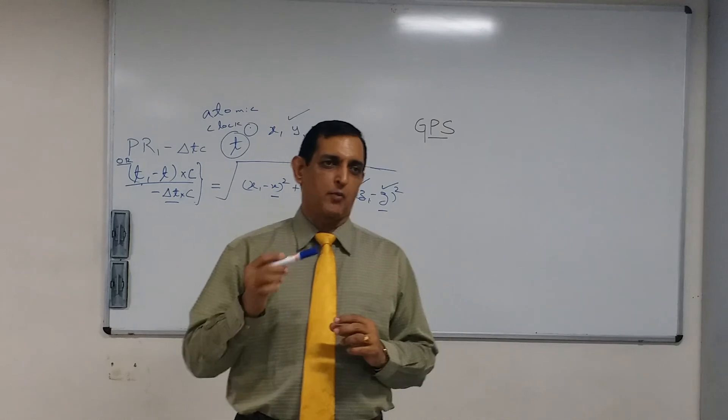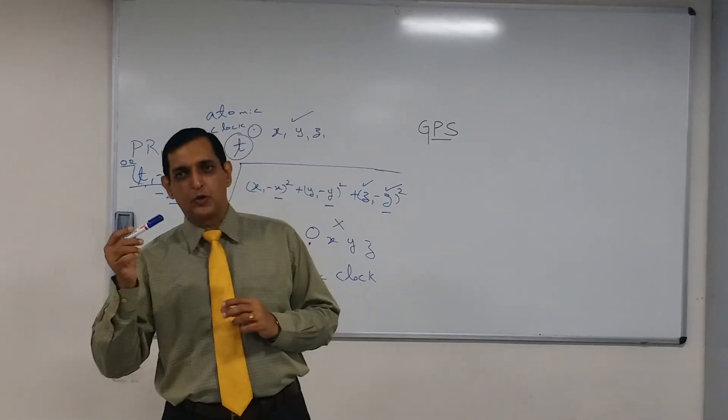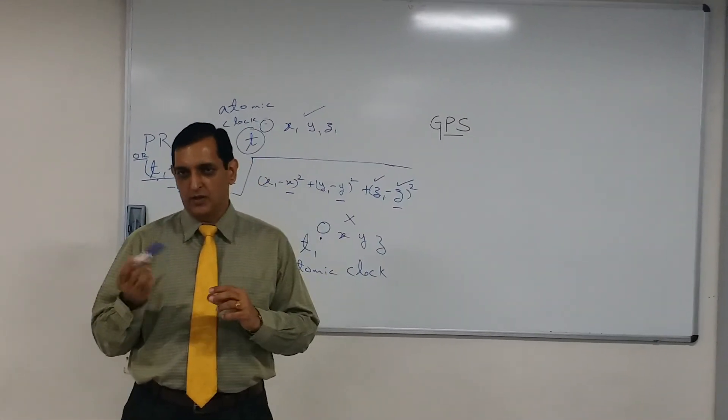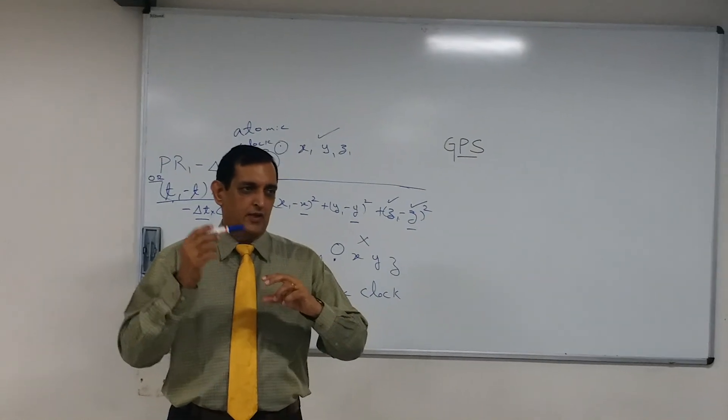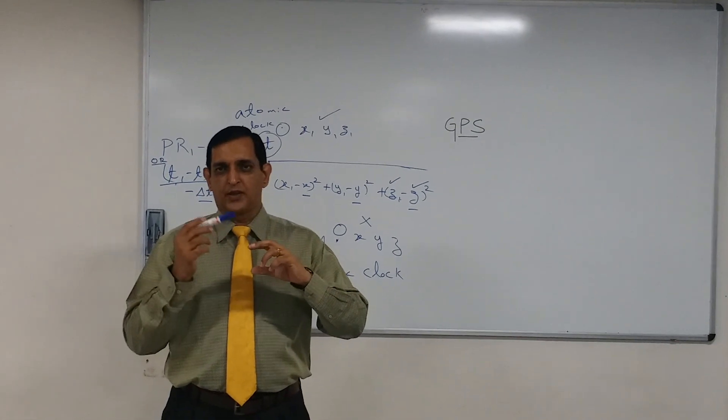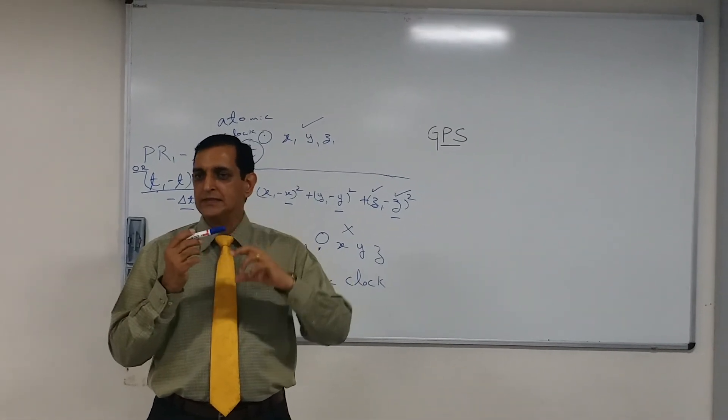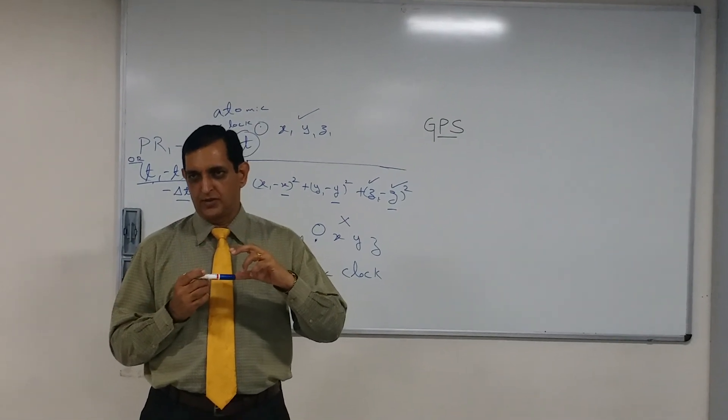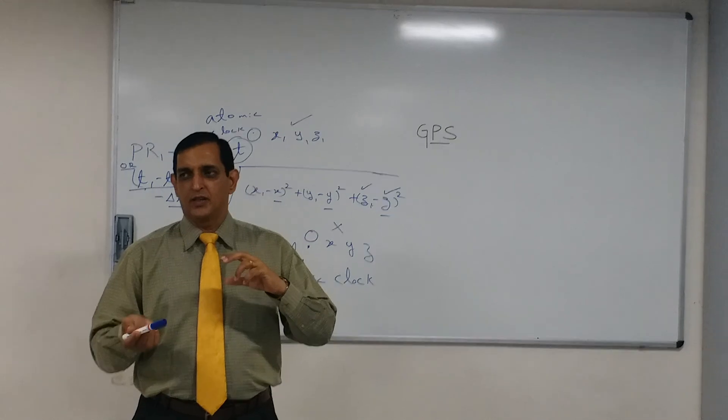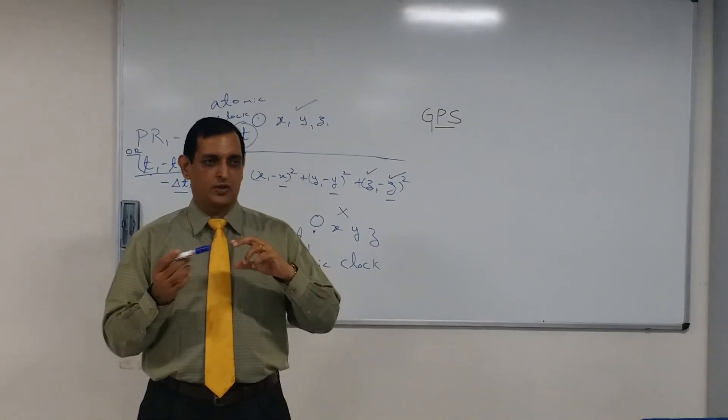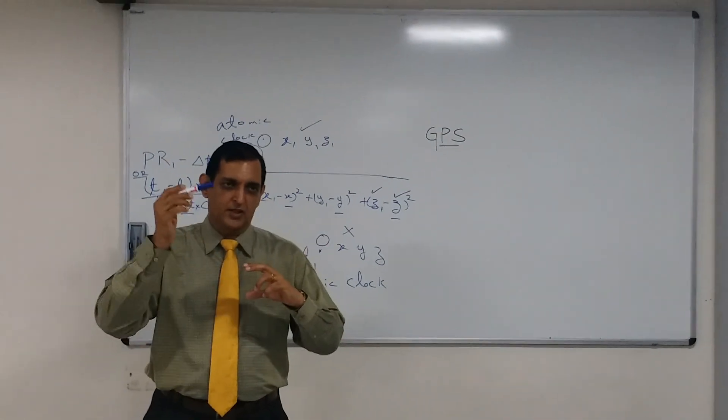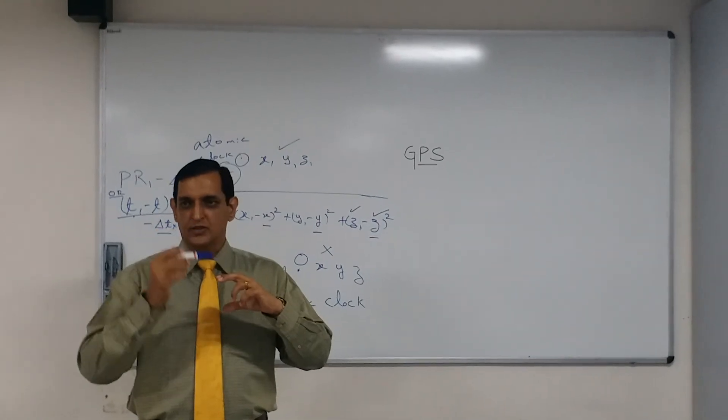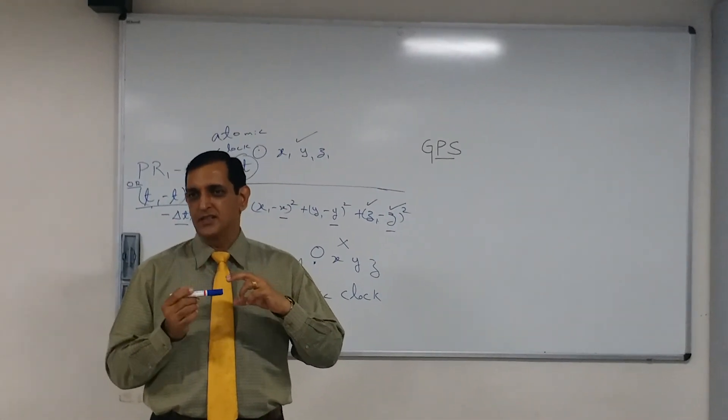The velocity of the electromagnetic wave in space is 3 into 10 raise to 8 meters per second, or rather in vacuum. But when it comes into atmosphere it is facing an opposition, so the velocity gets reduced. It can also be in terms of refraction and all. Right now you can just take it as, since there is opposition the wave's velocity gets reduced.